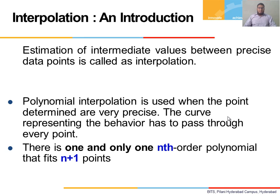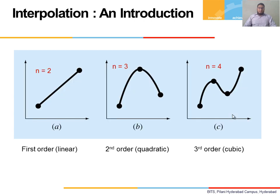We know what polynomial interpolation is. Polynomial interpolation is basically: a set of points are given and we need to find what f(x) is that satisfies these data points. We know that one and only one function satisfies these points. Through these n+1 number of points, only one nth-order polynomial would satisfy them. These are examples of linear, quadratic, and cubic polynomial functions.